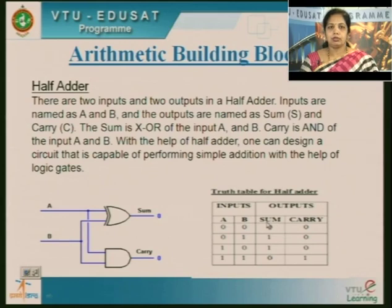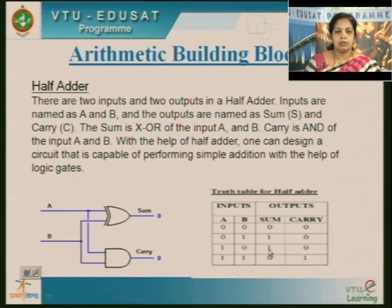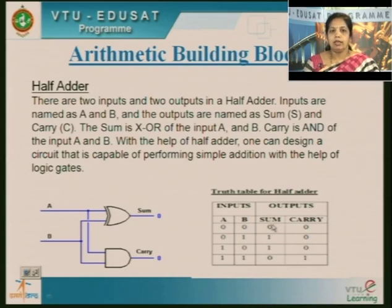We generate the truth table with two inputs producing four combinations and two outputs — sum and carry. When adding two binary zeros, sum is 0 and carry is 0. Adding 0 and 1, sum is 1 and carry is 0. Adding 1 and 0, sum is 1 and carry is 0. Adding 1 and 1 gives 2 in decimal, which in binary is 10 — so sum is 0 and carry is 1. We get two outputs.